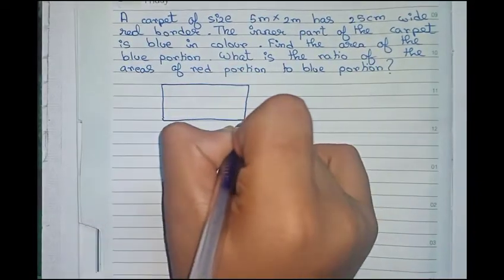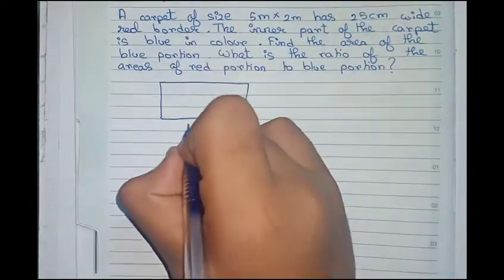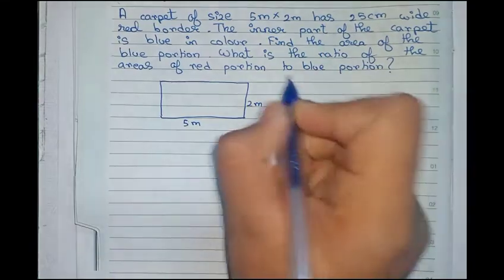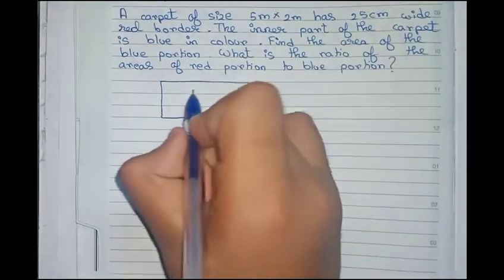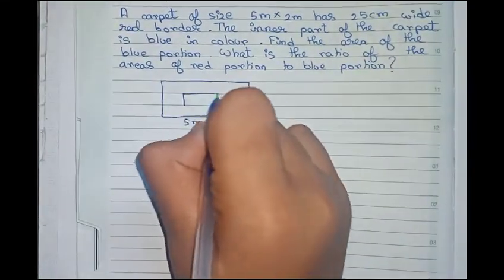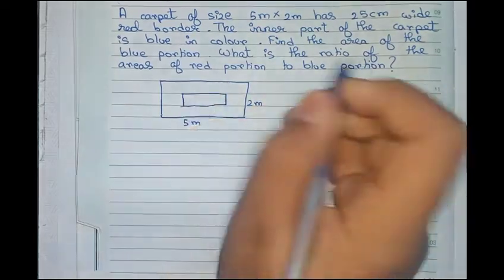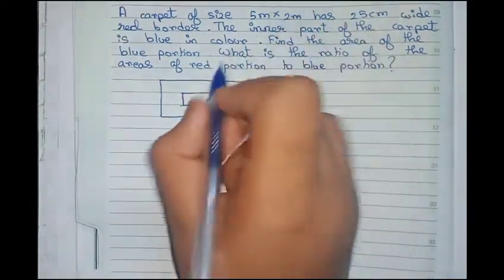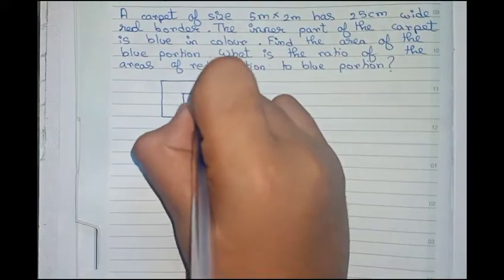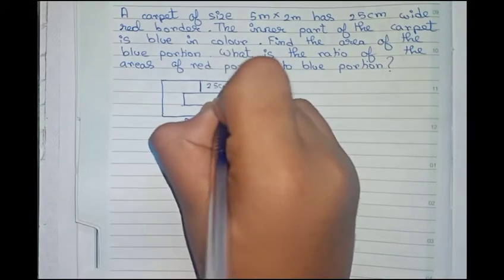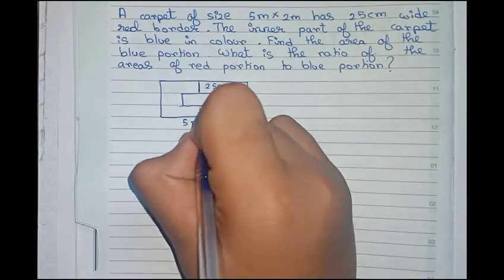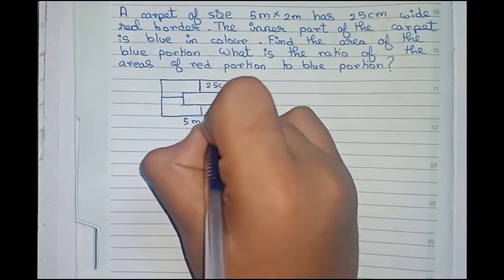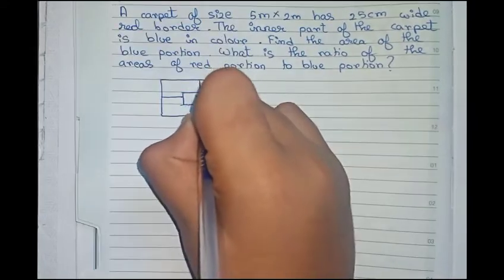So now let's solve this. First we draw the structure. This is our full carpet, 5 meter by 2 meter. Inside there is a blue portion, and there is a 25 centimeter gap on each side — this side, this side, and this side also. So this is our red portion and this is our blue portion.